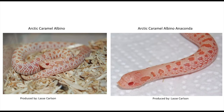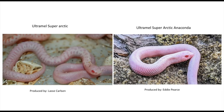We can go a little further and add the arctic gene, so you can see the arctic caramel albino and then the arctic caramel albino anaconda. Going one step further with the super arctic, this is the ultramel super arctic on the left, and then the super arctic anaconda ultramel on the right — very interesting snakes.